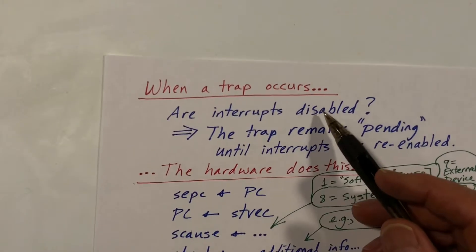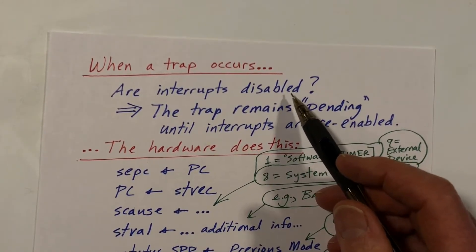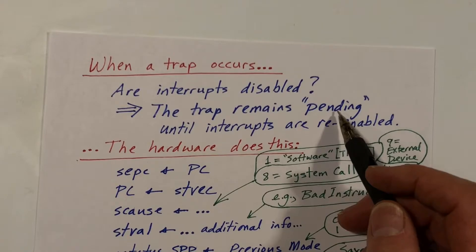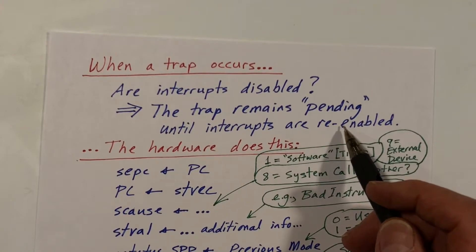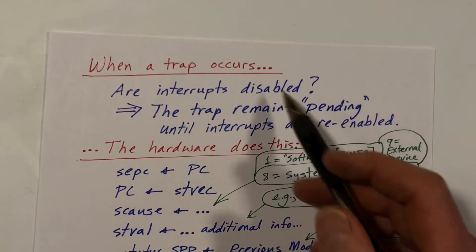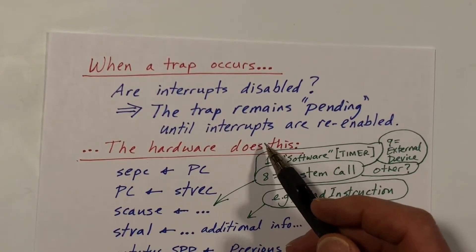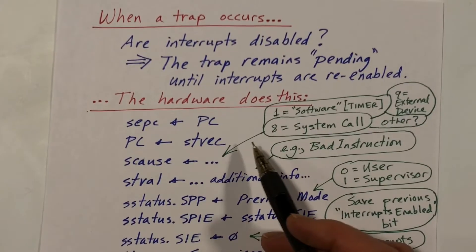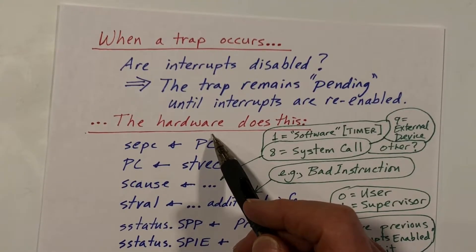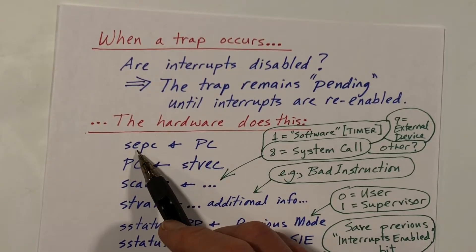What happens when a trap occurs? The first question is whether interrupts are enabled or disabled. If interrupts are disabled, the trap will remain pending and the handler code will not run until the kernel re-enables interrupts. If it's an exception, it will be handled immediately regardless. When the trap is handled, the hardware completes the previous instruction, then saves a copy of the program counter in a control and status register called SEPC.